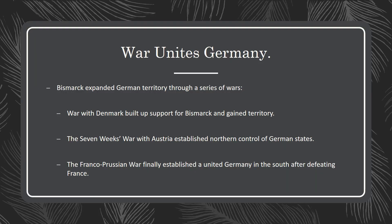Prussia played a leading role in uniting Germany through a series of wars. A war with Denmark built up support for Bismarck and gained territory. The Seven Weeks War with Austria established northern control of German states. Then the Franco-Prussian War finally established a united Germany in the south. After defeating the French, Germany was complete — both northern and southern Germany were now formed.